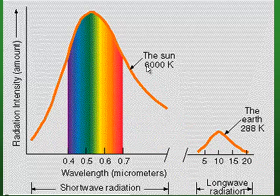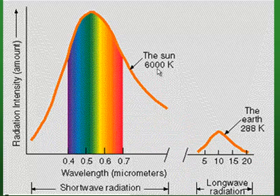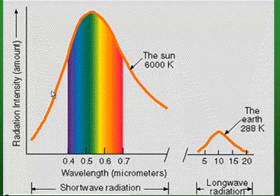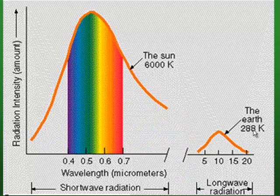For example, the sun has a temperature of about 6,000 degrees Kelvin, so its peak emittance is at about 0.5 micrometers. This is the spectral response curve for the sun. In contrast, the Earth has a temperature of about 288 degrees Kelvin, so its peak emittance is about 10 microns.